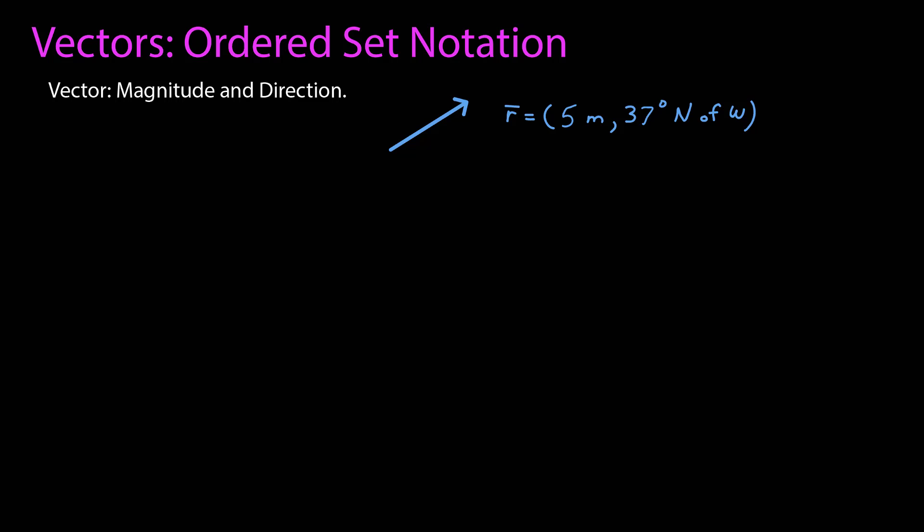Also, in most calculus courses that do vectors, they use the ordered set notation almost exclusively. Remember, a vector is an object that requires a magnitude and a direction to completely define it. Vectors are objects that you can translate without changing their meaning, as long as you don't rotate them.